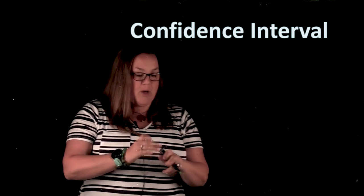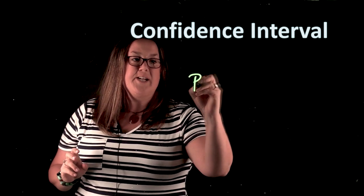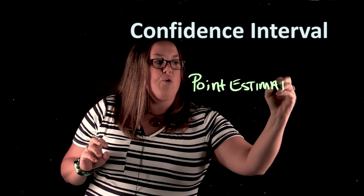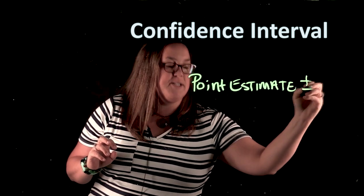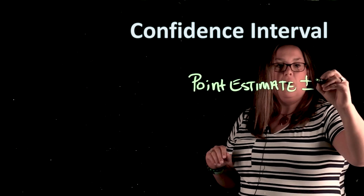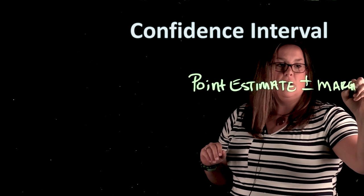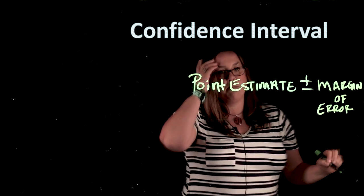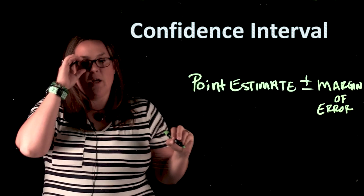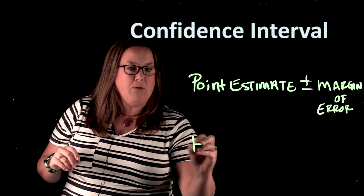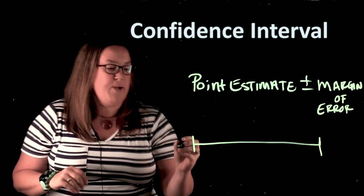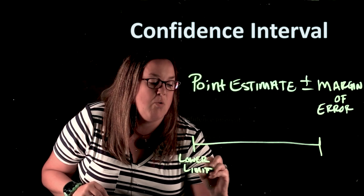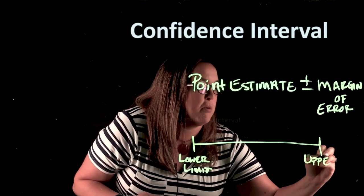So the generic formula for a confidence interval is to take some point estimate, and you're going to add and subtract something called a margin of error. What happens is you will get a lower bound and you'll end with an upper bound. Sometimes people call it a lower limit, or you could call it an upper limit or an upper bound.